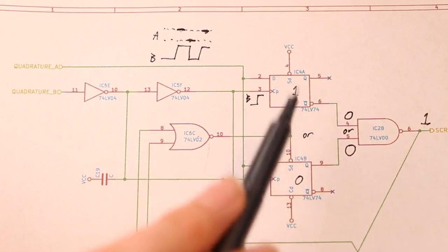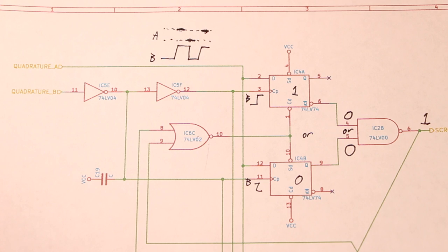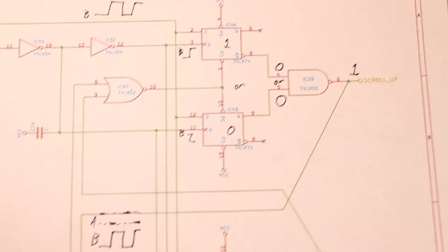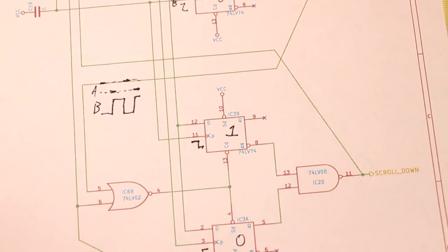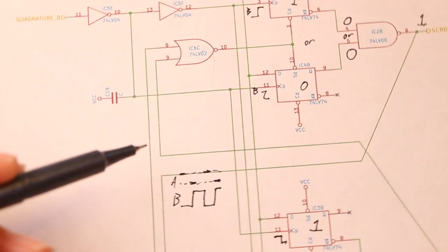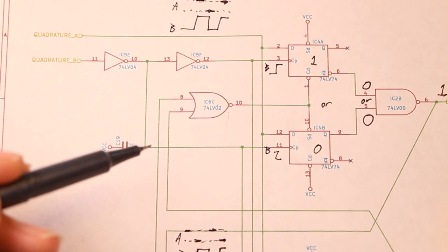In addition to detecting the phase relationship between the two signals this circuit also has the important job of latching the scroll signals until the next packet can go out to the tablet. Both of these circuits use a NOR gate to provide two different ways to reset both flip-flops into their inactive states.